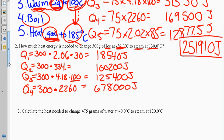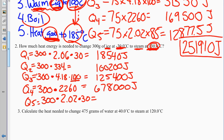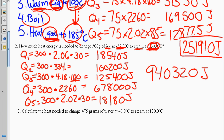Q5: we are a gas at 100 degrees Celsius, but we want to be at 130. We've already paid to get to 100, so we only need to go 30 more degrees. 300 times 2.02 times 30 equals 18,180 joules. Adding everything together gives a final answer of 940,320 joules.